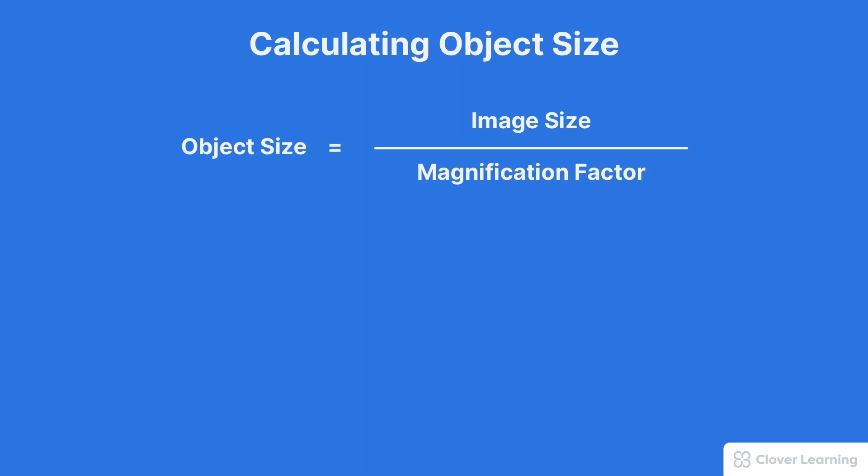Remember, the object size, that's the actual anatomy, is just equal to the image size divided by the magnification factor. We know the image size, that's 12 centimeters, but we need to calculate the magnification factor in order to use this formula. The magnification factor is equal to the SID divided by the SOD.